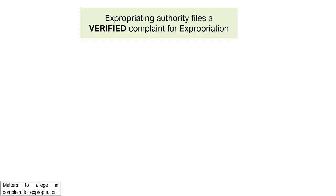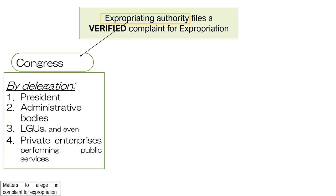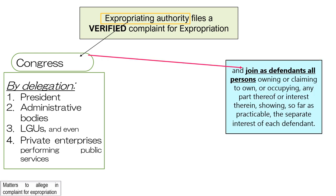Regarding matters to allege in a complaint for expropriation: the action is initiated by filing a verified complaint. Who can file? The expropriating authority is Congress, but Congress can delegate this to the President, to administrative bodies — usually the DPWH — or to local government units, or even to private enterprises performing public services. The defendant is any person who owns the property, claims ownership over it, or occupies it. The important thing is that the defendant has an interest over that property.